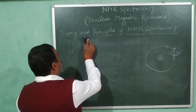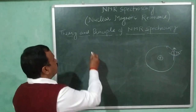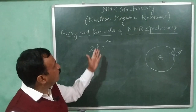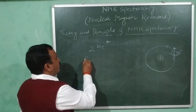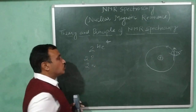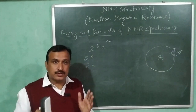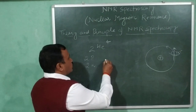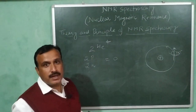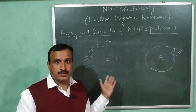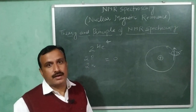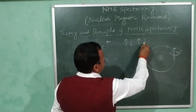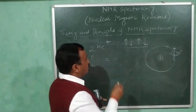Let us take the example of the helium nucleus, represented as 2He4, where 2 is the atomic number and 4 is the mass number. This helium nucleus has 2 protons and 2 neutrons. Experimentally, the resultant nuclear spin of the helium nucleus is equal to zero, meaning the nuclear particles have anti-parallel (paired) spins, so the net spin is zero.